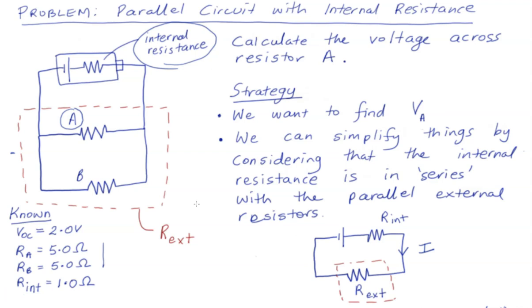So I'm going to begin by talking through the strategies that we need to interpret the circuit and step through systematically to calculate the voltage across resistor A. We're trying to find VA. We can simplify our circuit by considering that the internal resistance is in series with the parallel external resistors.